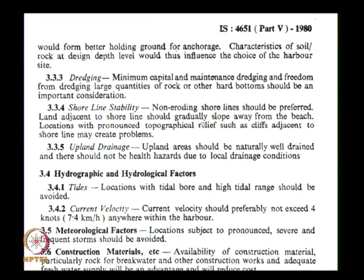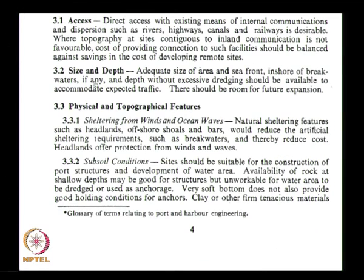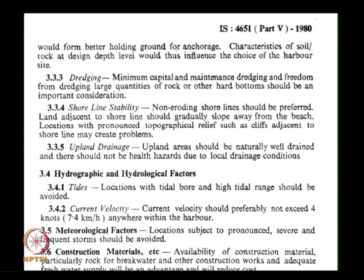Non-eroding shorelines should be preferred. The land adjacent to the shoreline should gradually slope away from the beach. There are two aspects: sea side and land side — if you have cliffs, that will create problems because you have to level the surface. Drainage is also very important; it should be naturally drained. So there are five aspects governing the location: upland drainage, shoreline stability, dredging, sheltering from winds and ocean waves, and subsoil conditions.